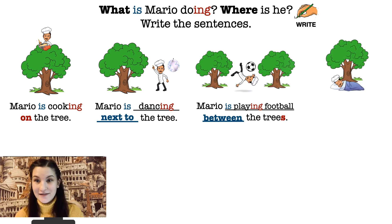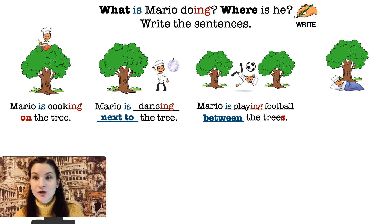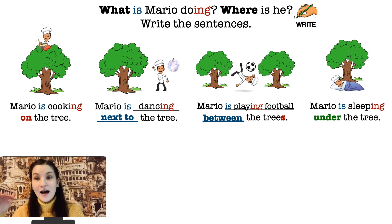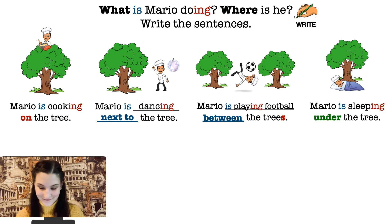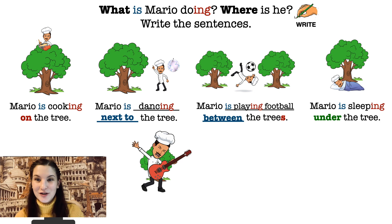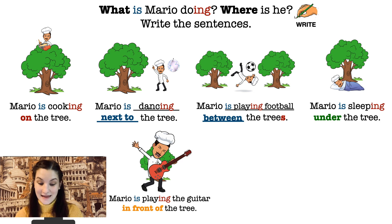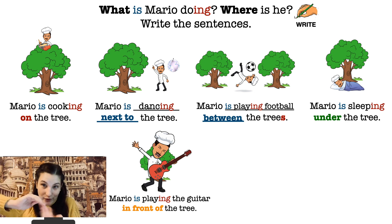The next picture — pause the video and write the sentence. You need to write the whole sentence yourself; you do not have a model here. What is Mario doing and where is he doing this action? Mario is sleeping under the tree. It's very hot inside his house, that's why he decided to go outside and sleep under the tree — why not? It's summer! The next one: what is Mario doing and where? Mario is playing the guitar in front of the tree, because we can see big Mario and a small tree — that's why we can say Mario is in front of the tree.